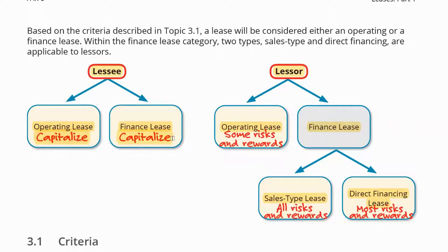If any of those five OWNS conditions is met, then this is a finance lease. If none are met, then it's an operating lease. At the start of the lease, the treatment is exactly the same — you would capitalize, recognizing an asset and related liability. Later on, the subsequent treatment depends on whether it's an operating lease or a finance lease. That's the classification for the lessee.